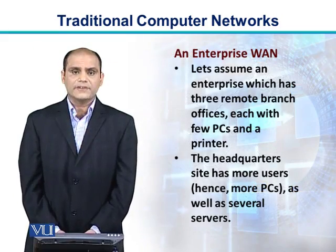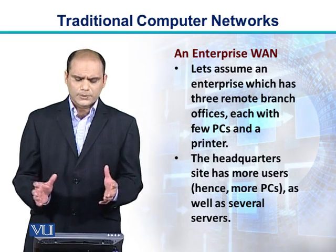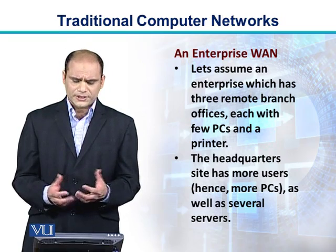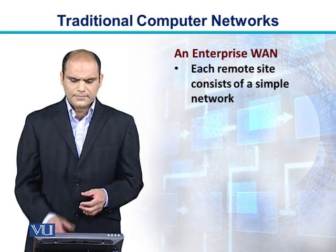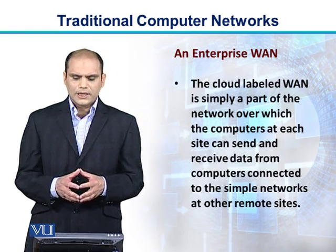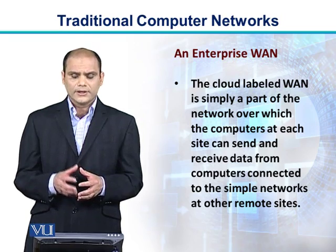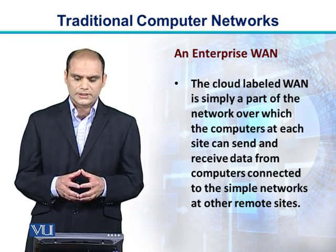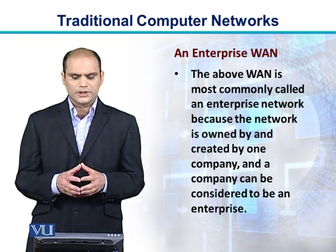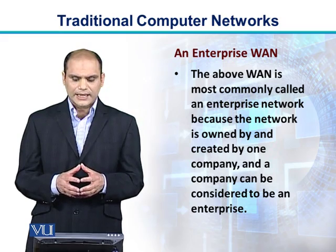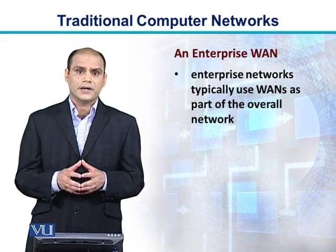In this diagram, we have shown an enterprise WAN — a company owning three different branch offices located far away from each other. Each has a few PCs and a printer, while the headquarters site has more users, more PCs, as well as servers. Each remote site consists of a simple network. The cloud labeled WAN is simply the part of the network over which computers at each site can send and receive data from computers at other remote sites. This WAN is most commonly called an enterprise network, because the network is owned and created by one company — an enterprise. Enterprise networks typically use WANs as part of the overall network.